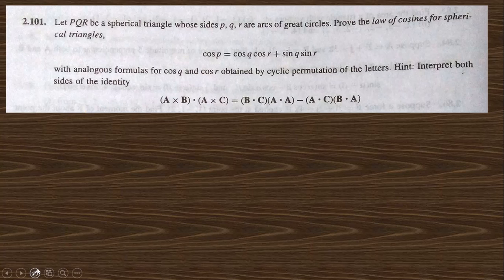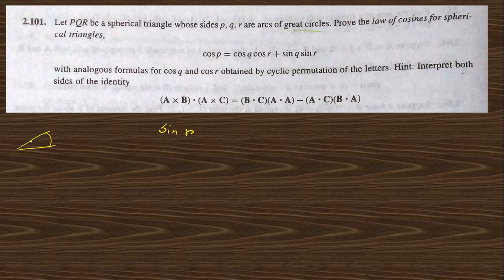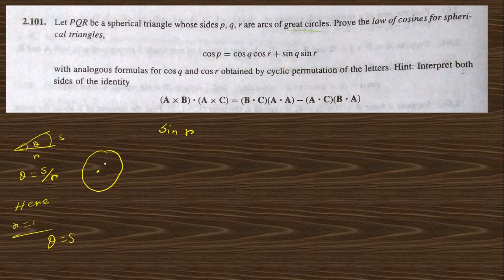Next question 2.101: let PQR be a spherical triangle whose sides are arcs of great circles, meaning this is a three-dimensional sphere. We use the law of spherical angles. From the cross product relation, A × B gives sine of the angle, and since the radius R equals 1, the angle theta equals the arc length S. You can draw a spherical triangle on a sphere with origin O and three vectors A, B, C corresponding to points R, Q, P.